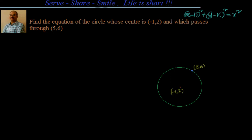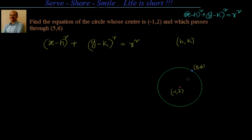Now we know the standard form of the equation of the circle is x minus h whole square plus y minus k whole square equal to r square. So let me write it down: x minus h whole square plus y minus k whole square equal to r square, where h comma k is the center of the circle. Now x minus h is minus 1, so I'll have x minus of minus 1 whole square plus y minus k is 2, so y minus 2 whole square equal to r square.